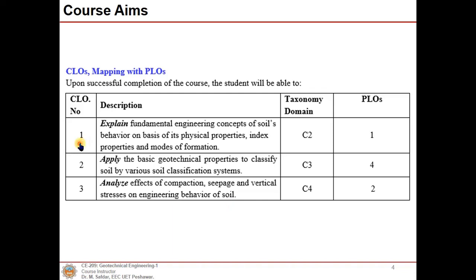There will be three Course Learning Objectives. CLO1 is related to explaining the fundamental engineering concepts of soil behavior on the basis of its physical properties, index properties, and modes of formation. In CLO2 we will apply the concepts of soil classification and basic geotechnical properties. In CLO3 we will analyze the effects of compaction, seepage, and vertical stresses on the engineering behavior of soil.